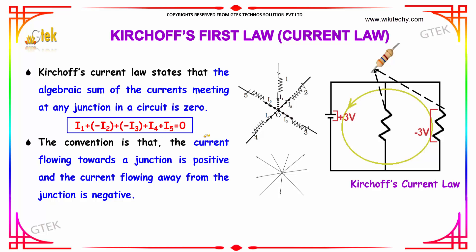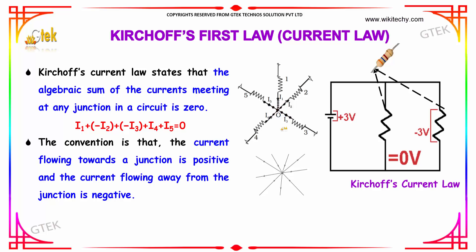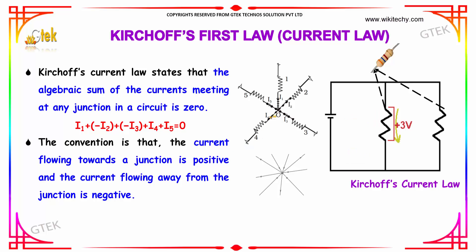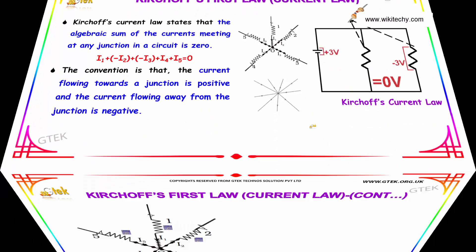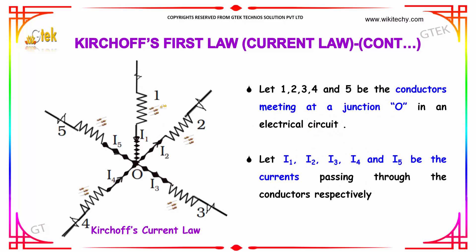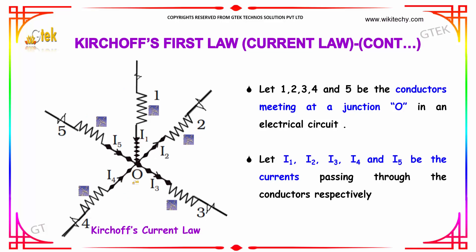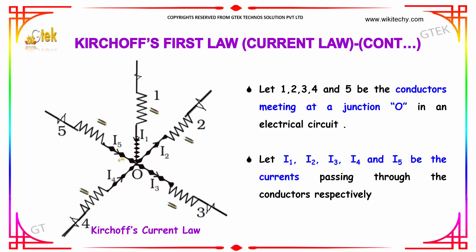The sum of all currents at junction O is zero. The convention is that current flowing towards the junction is positive, and current flowing away from the junction is negative. Let conductors 1, 2, 3, 4, and 5 meet at junction O in an electrical circuit, with I1, I2, I3, I4, and I5 being the currents passing through them respectively.